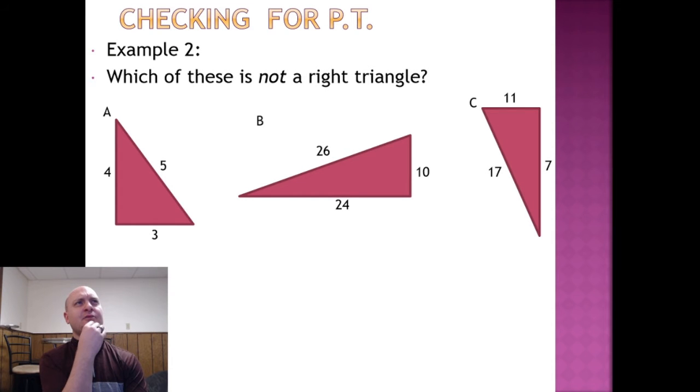Okay now in this slide we're confronted with multiple choice but it's asking which of these is not a right triangle. Well it stands to reason that the triangles that work for a squared plus b squared equals c squared are going to be right triangles and the triangle that doesn't work will not be a right triangle. So I think this means we have to test all three triangles for the Pythagorean theorem. That's kind of a lot. I wonder if there's anything we could do that would speed this up.